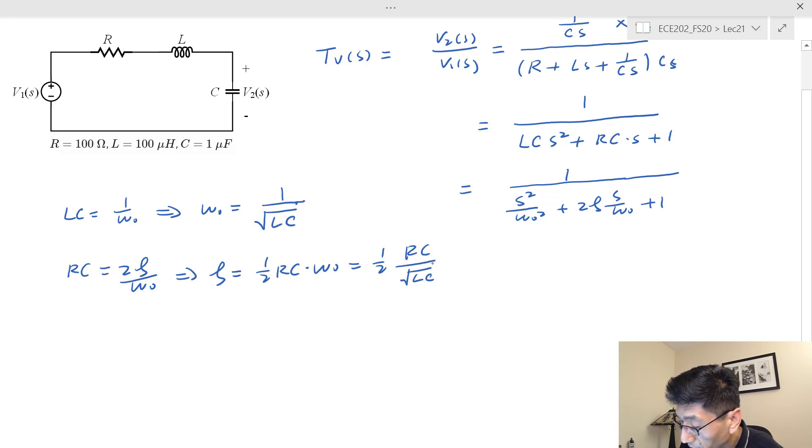Which is half RC over square root of L times C. If we divide by C we cancel this C, and we can move this C into the square root to become C squared. So we have half of R over square root of L over C. L over C is typically known as characteristic impedance in the RLC circuit.